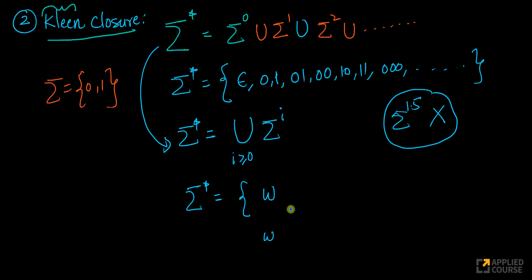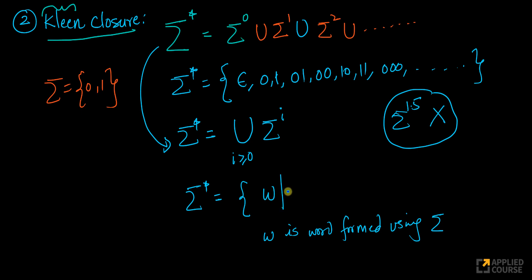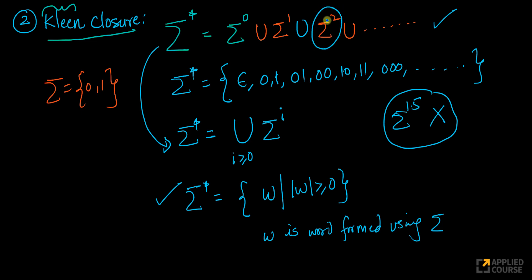Another way to define Kleene closure: sigma star is the set of all words w such that the length of w is greater than or equal to 0, where w is a word formed using all the symbols in alphabet sigma. This is a more simple set-theoretic definition. There are multiple ways to understand the same concept.